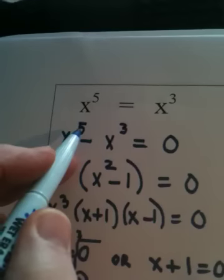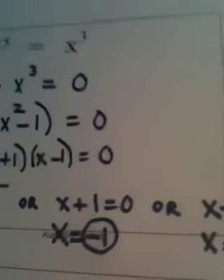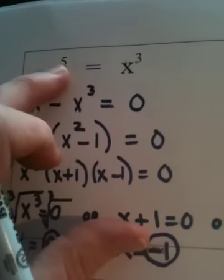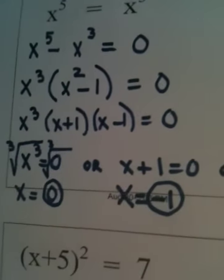Notice that the degree is 5. We did not get 5 answers. We got 3. So the degree of an equation indicates the maximum number of answers you're going to get.